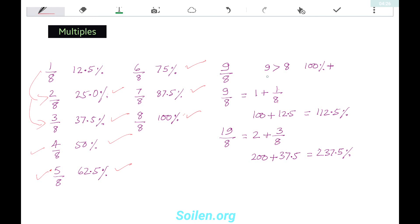Now, 9/8. When the numerator is greater than the denominator, we will always have a percentage more than 100. So we can write 9/8 as 1 plus 1/8. We know 1 means 100 percent, and 1/8 is 12.5 percent. So 9/8 becomes 112.5 percent. In the same way, 19/8 we can write as 2 plus 3/8.